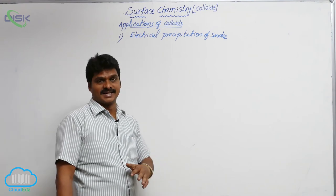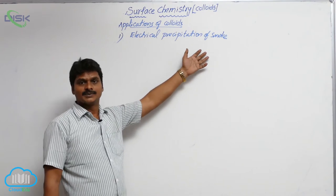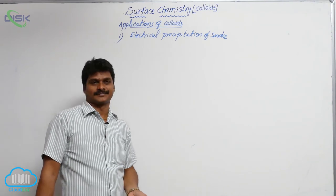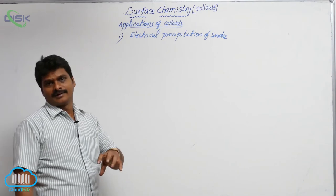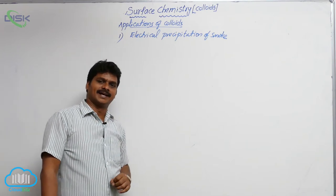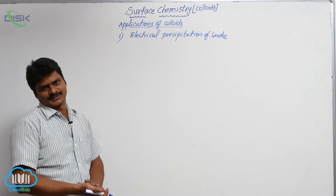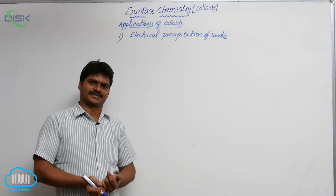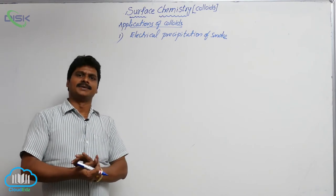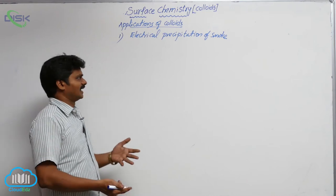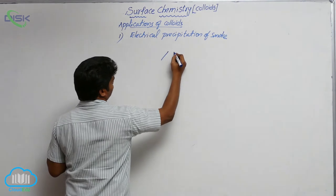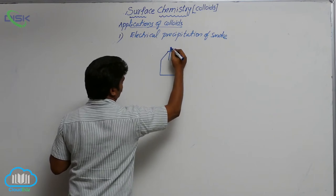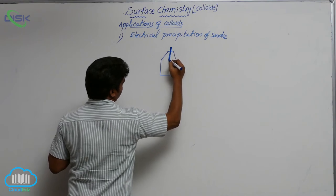If these smoke particles are released into the atmosphere directly, they cause air pollution. That's why before releasing into the atmosphere, the dust particles must be removed from the industrial smoke gases. To do this, there is a Cottrell's precipitator — an apparatus used to remove suspended particles so that at least some pollution can be prevented in the atmosphere.